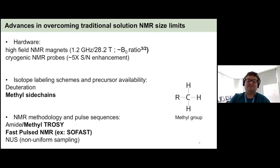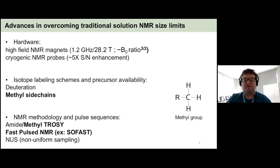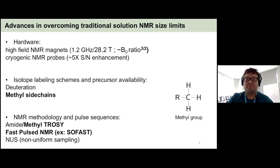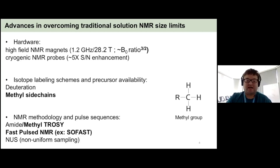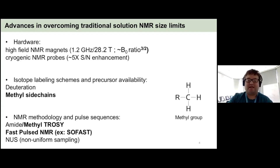Over the last two decades, there's been a lot of energy into advancing and overcoming these traditional size limits — first in hardware, with new high-field NMR magnets such as the 1.2 gigahertz magnet commercially available from Bruker, and new cryogenic NMR probes for signal enhancement. There have also been advances in isotopic labeling schemes, including deuteration and methyl sidechains, and new NMR methodologies such as amide and methyl TROSY, fast-pulse NMR, and non-uniform sampling.